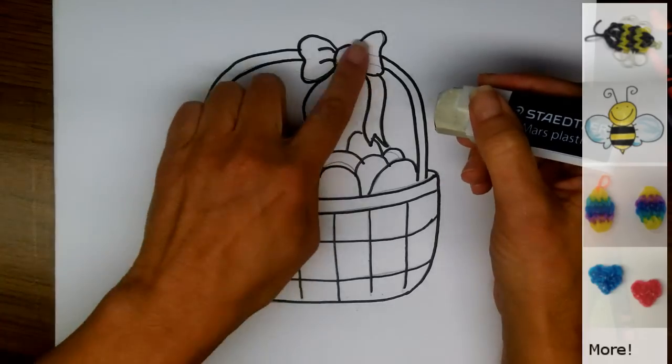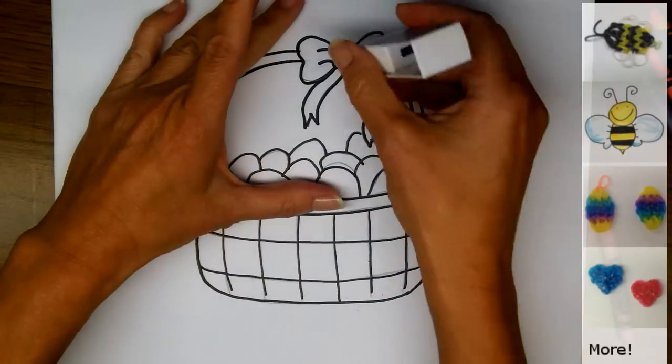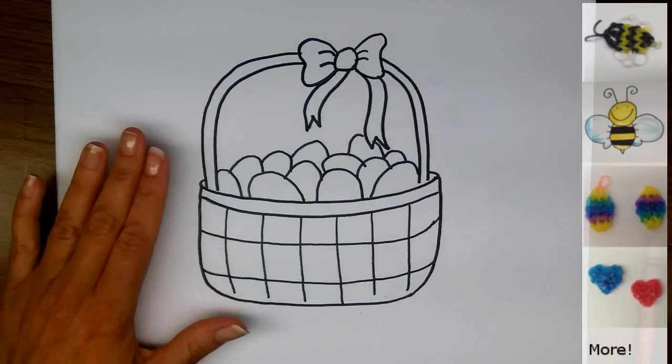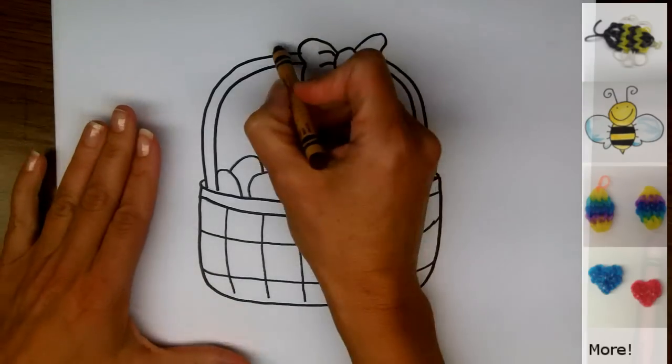So now it's time to erase all the pencil marks that are showing through. All right, and with our pencil lines erased, we're ready to color in. I'm going to color my basket brown.